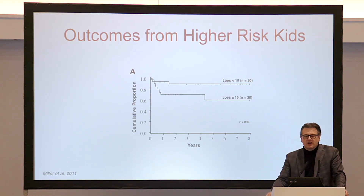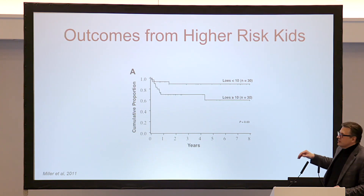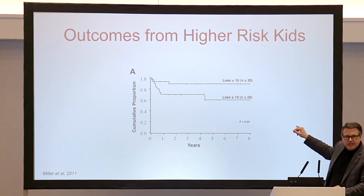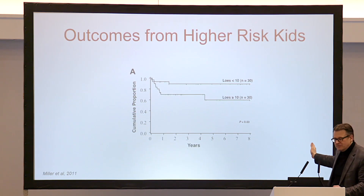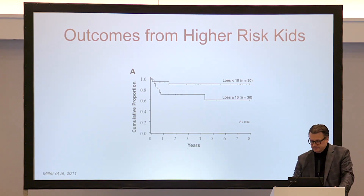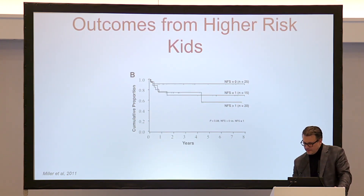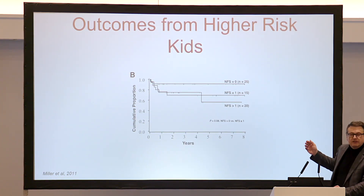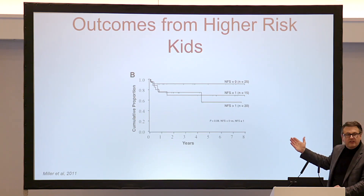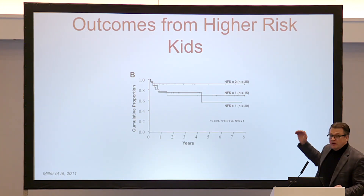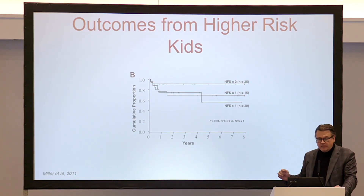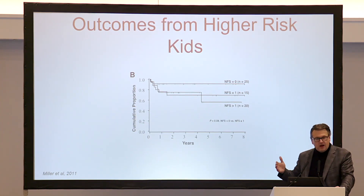Looking at other outcomes just based on the Loes score — looking at survival — if you have a Loes score less than 10, survival is much better than if your score is greater than 10, and this is statistically significant. Based on neurologic function scores: if you come in with no symptoms, your survival after transplant is superior. With an NFS of 1 you take a step down, and with two or more symptoms you take a couple more steps down. Catching this disease earlier is always going to be better — hence the push for newborn screening, which would be the earliest time possible.